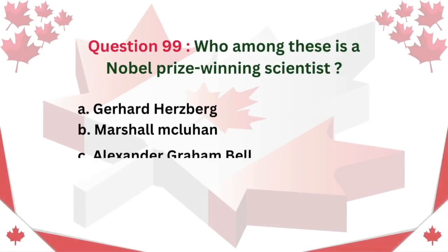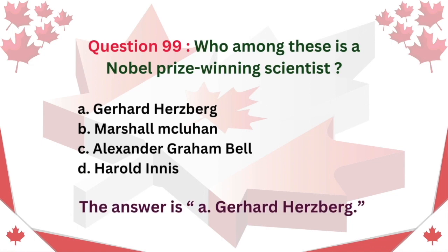Question 99: Who among these is a Nobel Prize-winning scientist? A. Gerhard Herzberg. B. Marshall McLuhan. C. Alexander Graham Bell. D. Harold Innes. The answer is A: Gerhard Herzberg.